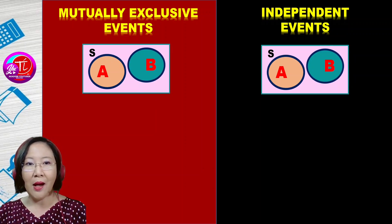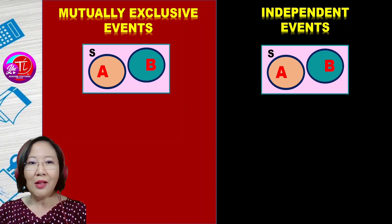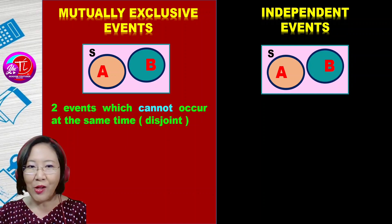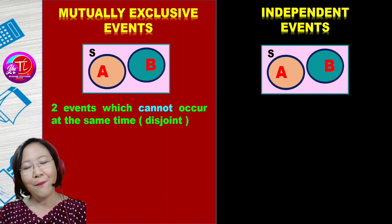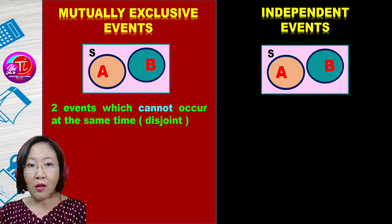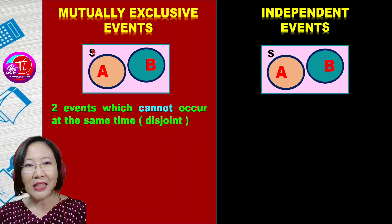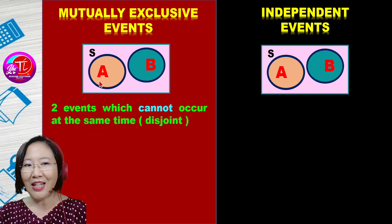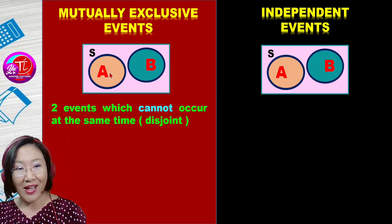Both of them are two different events. In mutually exclusive events, they are two events which cannot occur at the same time. Sometimes we call it disjoint. So you will never see anything in event A happening in event B — they are totally different events.